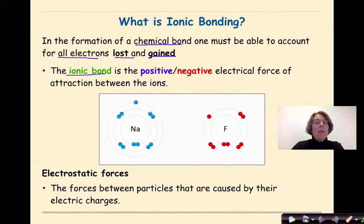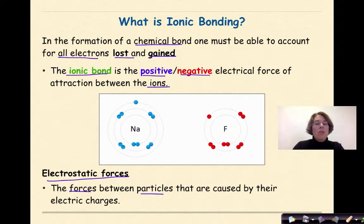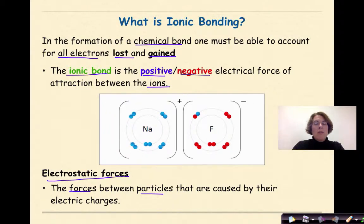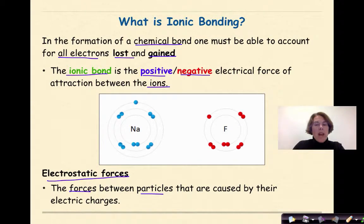The ionic bond is the positive-negative electrical force of attraction between the ions. These are known as electrostatic forces — the force between particles that are caused by their electric charges. We see the sodium donating the electron to the fluorine; the fluorine accepts it, the sodium becomes positive, and the fluorine becomes negative, forming that ionic bond between the two ions.